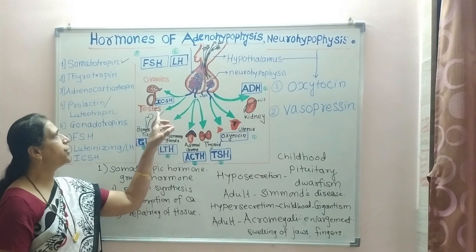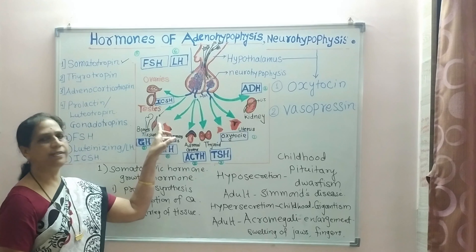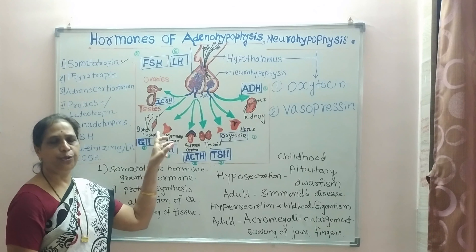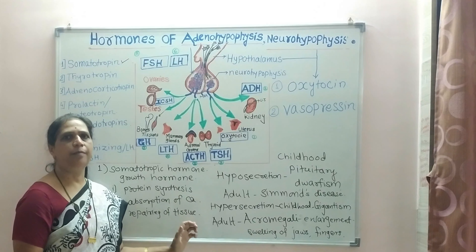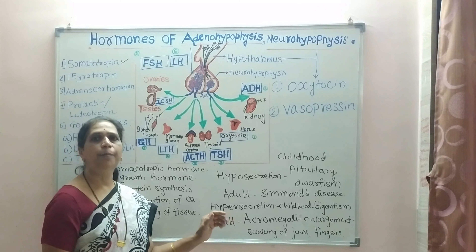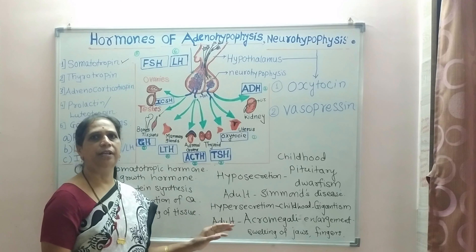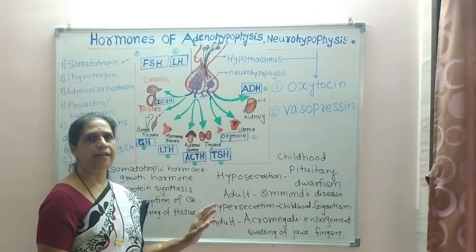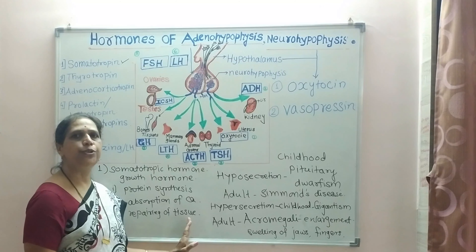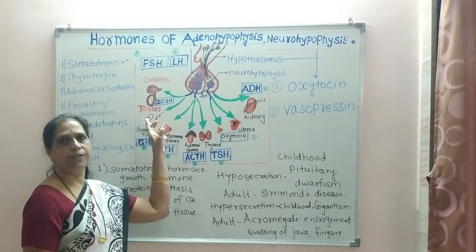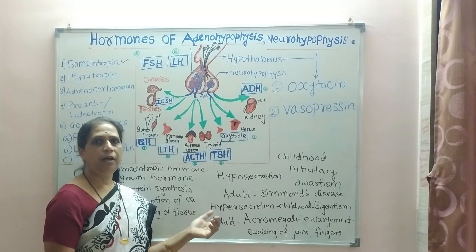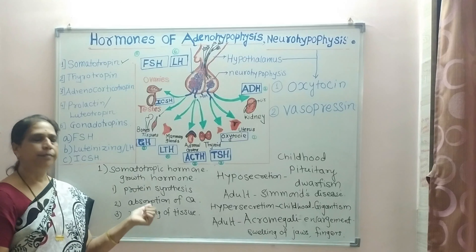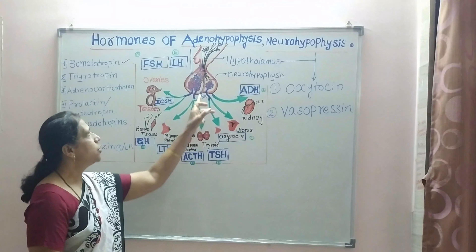Growth hormone acts on bones and muscles and causes repairing of tissues. Secretion of this hormone is greater up to maturity; after maturity it continues to be secreted and acts on repairing of tissue and growth of bones. So growth hormone is essential and plays different roles.